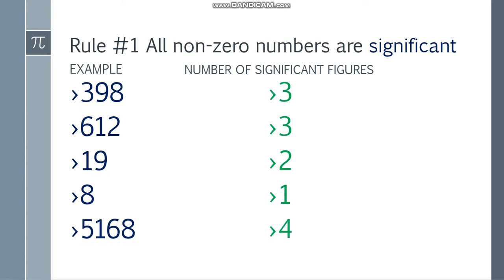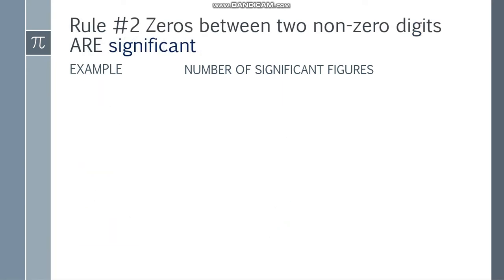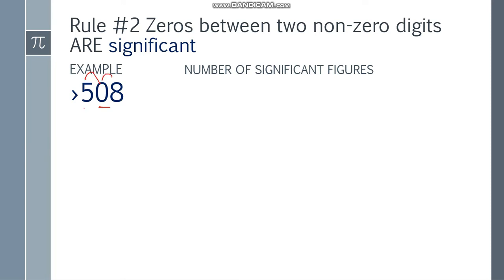Easy right? Rule number two: zeros between two non-zero digits are significant. Basta pag nasa sandwich siya, o napagkitnaan yung zero, matik yun — significant figure din siya, ika-count mo siya as significant. So yung zero nandito, kaso nasa gitna siya, nasa sandwich. So 1, 2, 3 — number of significant figures: 3.